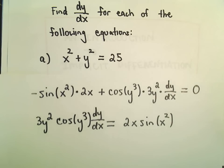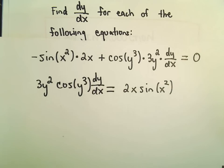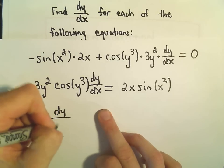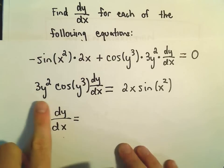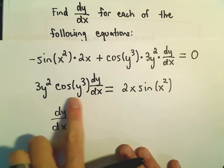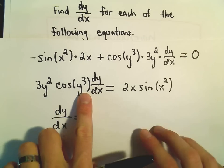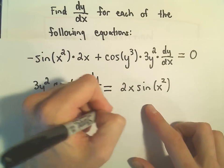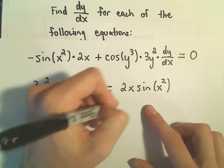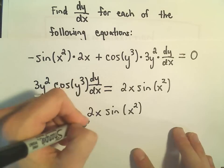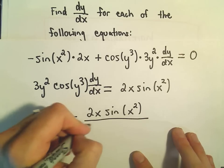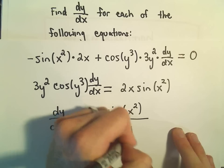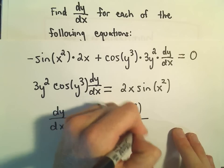Now, just the same thing — to get dy/dx all by itself, we divide both sides by 3y squared cosine y cubed. So dy/dx equals 2x times sine of x squared, all over 3y squared times cosine of y to the third power. And now we've got our derivative.